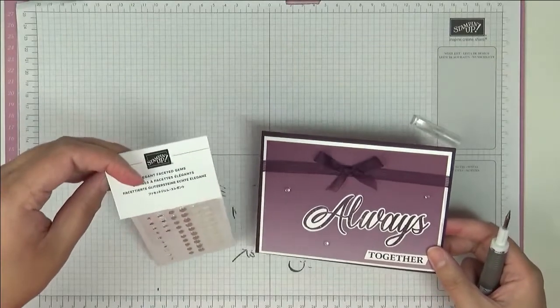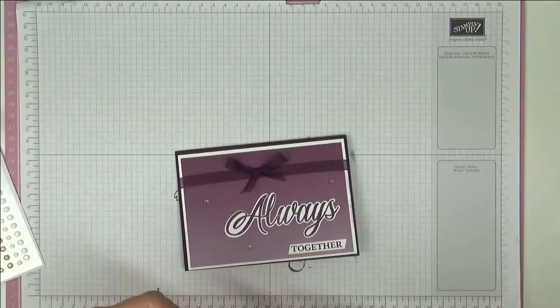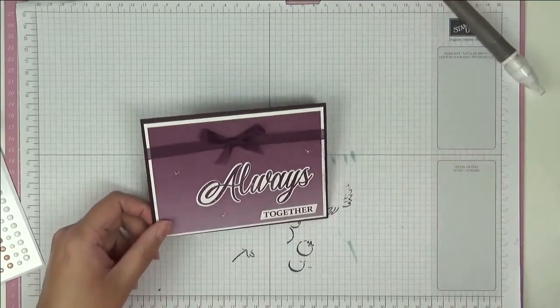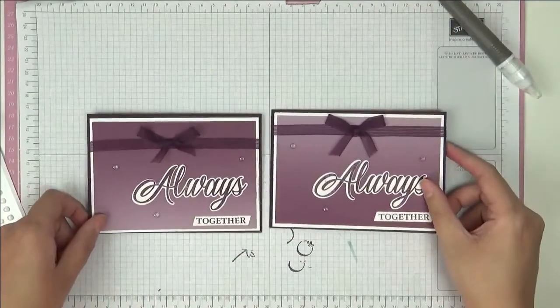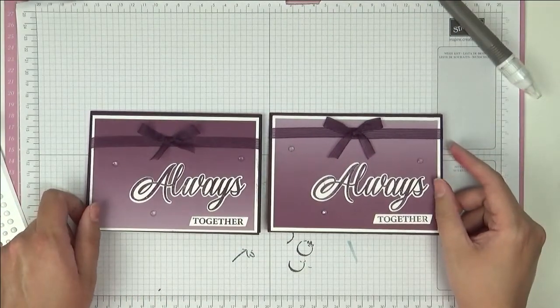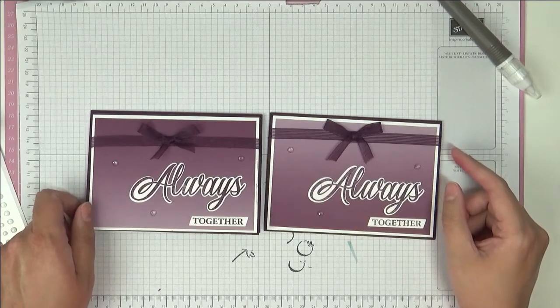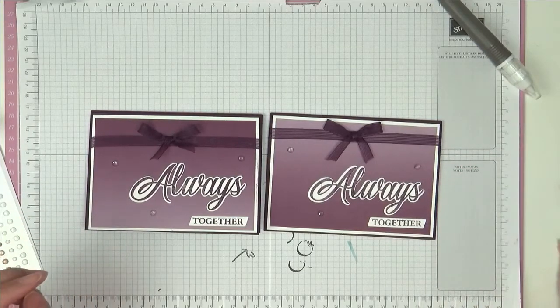So I've just added these elegant faceted gems to my card after I managed the bow. So there you go, two really simple, I think quite elegant cards. Let me know what you think.